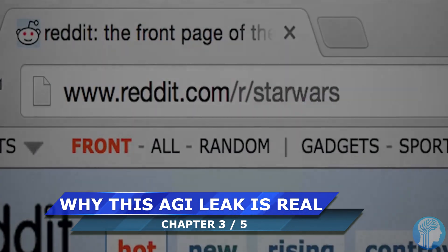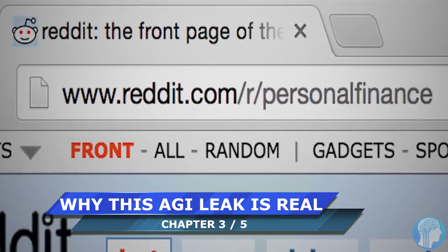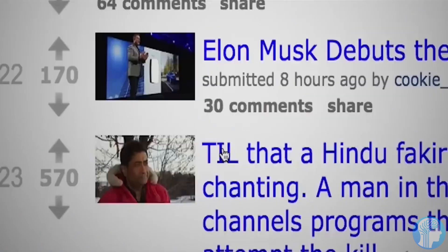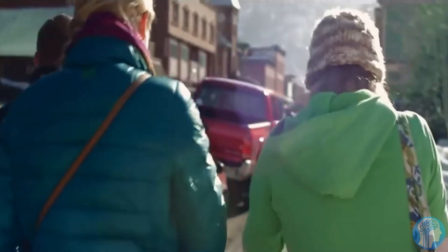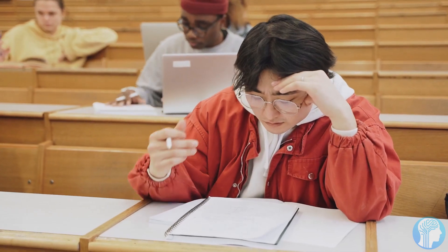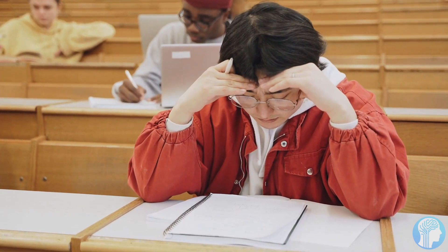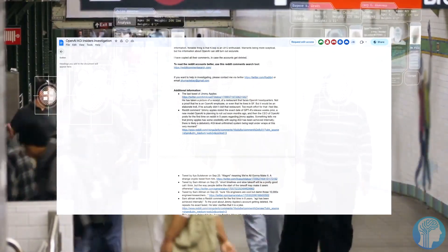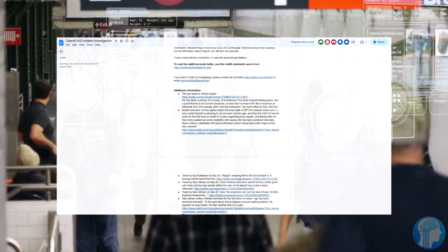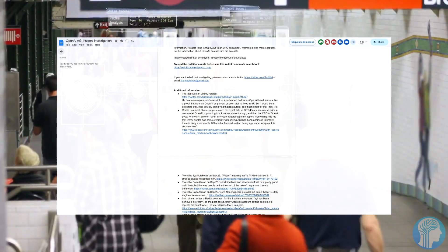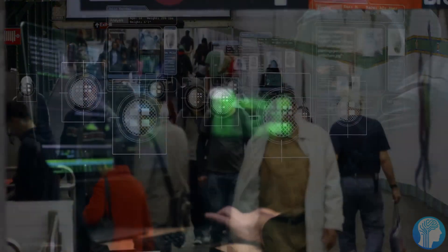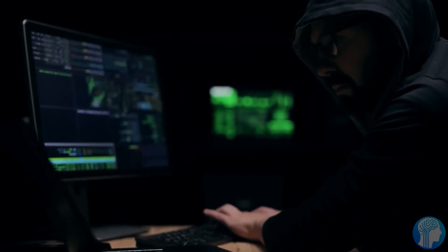This is where things take an even more intriguing turn. A document leaked by an anonymous Redditor has unveiled a web of connections between Jimmy Apples and several prominent researchers from OpenAI and DeepMind. Before we dive in, it's crucial to remember that correlation doesn't necessarily imply causation. While this could suggest that these researchers are in the know, it's not definitive proof that they've achieved AGI in private. The document showcases a series of emails, meetings, and collaborations between Jimmy Apples and key figures from both research powerhouses. Some of these interactions date back years, hinting at a long-standing relationship.